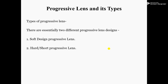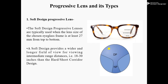Soft design progressive lenses are typically used when the lens size of the chosen eyeglass frame is at least 27 millimeters from top to bottom. A soft design provides a wider, longer field of view for viewing intermediate range distances, that is 18 to 30 inches.